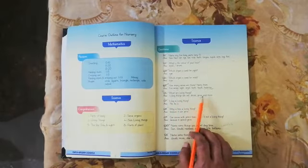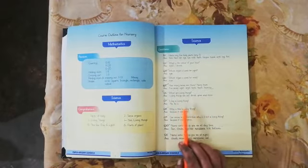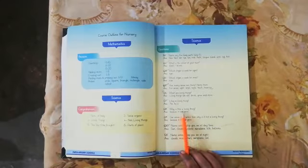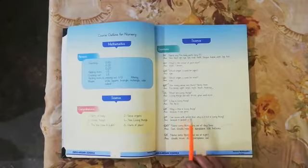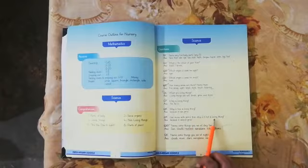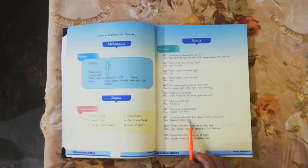What are living things? Living things can eat, drink, grow and move. Is boy a living thing? Yes he is. Why is tree a living thing? Because it can grow. Car moves with petrol. Then why is it not a living thing? Because it cannot grow.